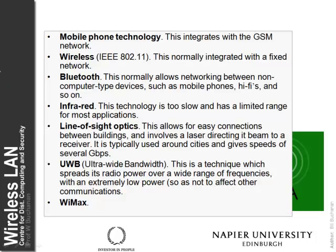What are some of the wireless LAN types that we have? There are many different technologies. We can use the standard GSM network for mobile phone type technology. We can use wireless systems based on the IEEE 802.11 standard. Bluetooth gives us a good amount of bandwidth in a fairly small area. We can have infrared communications, though it tends to be too slow and has a limited range for many applications. We can have line of sight optics, which generally has a bandwidth of several gigabits per second and can be used between buildings.